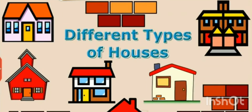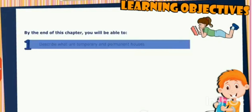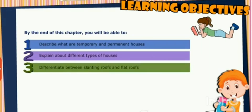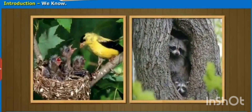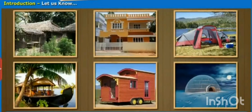Hello children, today our topic is different types of houses. There are many different types of houses — they are called permanent houses and temporary houses. In this video we are going to discuss temporary and permanent houses. You can see the pictures: there are some houses which are permanent in nature and some of them are temporary houses.